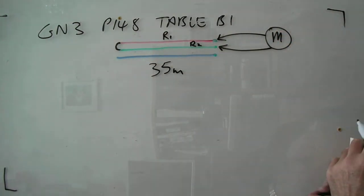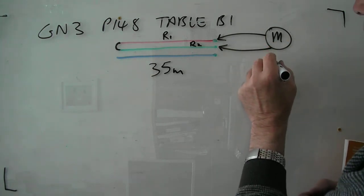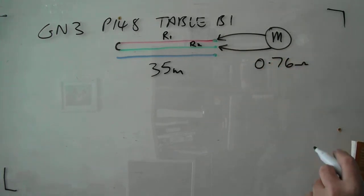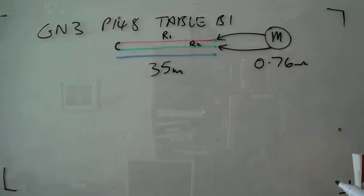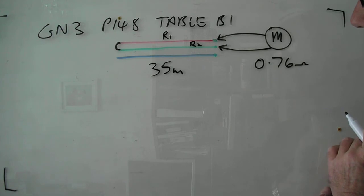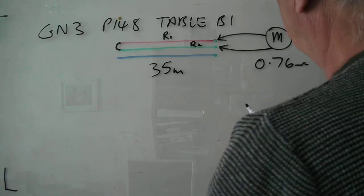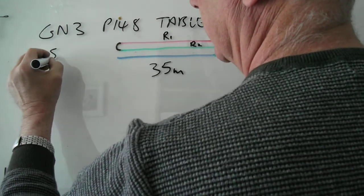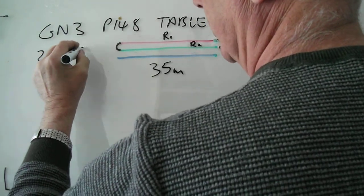R2 and the result you're getting is say 0.76 of an ohm. So if we know it's 35 metres long and we know that it's 2.5 and 1.5 cable.